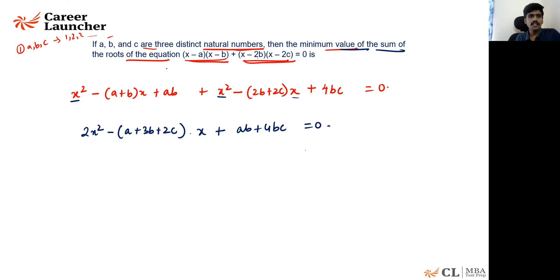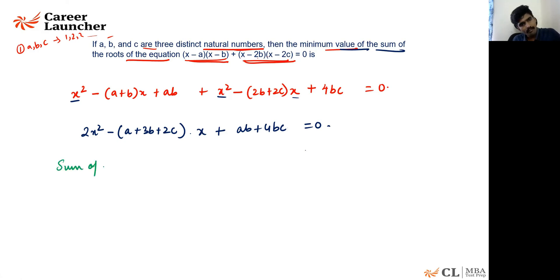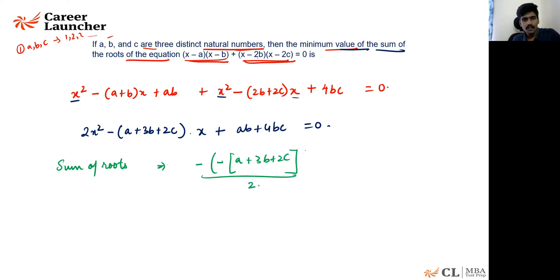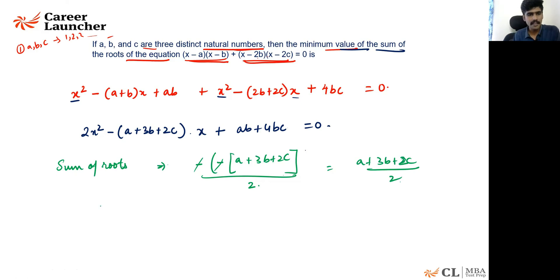The sum of roots of this quadratic 2x² − (a + 3b + 2c)x + (ab + 4bc) = 0 is −(−(a + 3b + 2c)) / 2 = (a + 3b + 2c) / 2. We need to minimize this, which means minimizing the numerator a + 3b + 2c, given that a, b, c are distinct natural numbers.